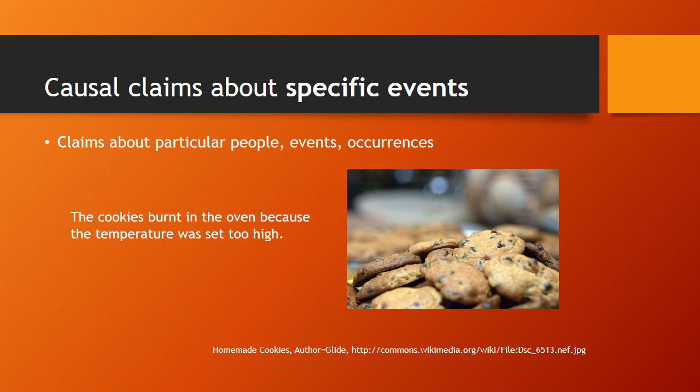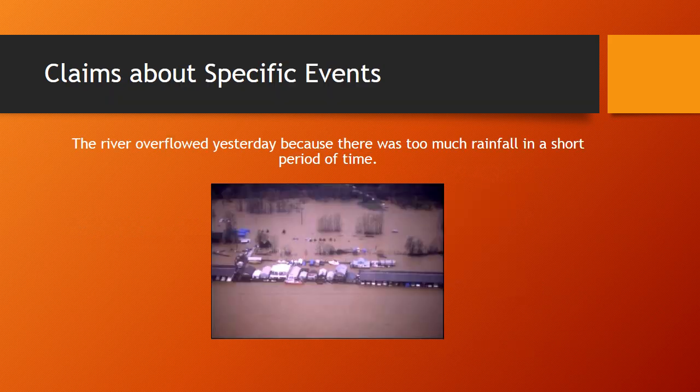Notice I'm not talking about why all cookies burn. I'm not talking about cookies in general at all. I'm talking about a specific occurrence, and so that's why this is a claim about a specific event. Let's take a look at another example. The river overflowed yesterday because there was too much rainfall in a short period of time. In this case, I am talking about this specific river overflowing on a particular day. Since I'm worried about a particular river and a particular event associated with that river, this counts as a claim about a specific event.